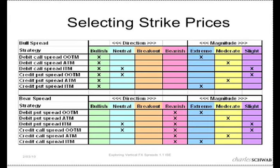You decide on your strike prices based on your level of bullishness. If you are doing a debit call spread where you're buying one call and selling another, the one that you buy is the more expensive of the two legs, which is why it ends up being a debit trade. If you are extremely bullish, you would typically use options that are out of the money — that's what OOTM stands for. When I talk about an out-of-the-money spread, I'm typically talking about both the long leg and the short leg being out of the money at the time the trade is established.